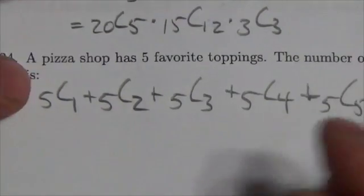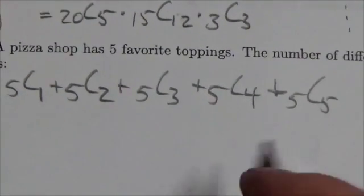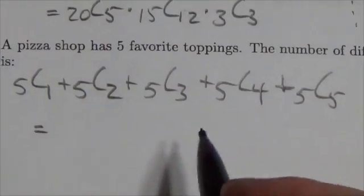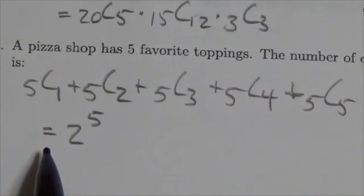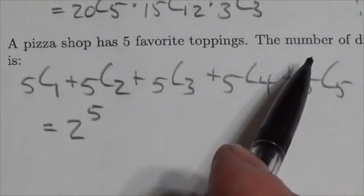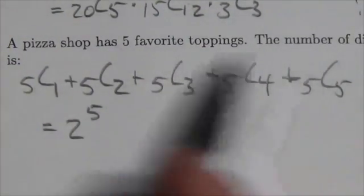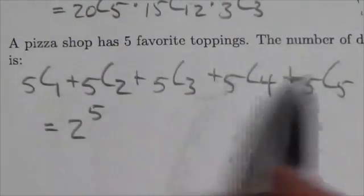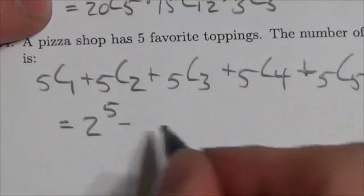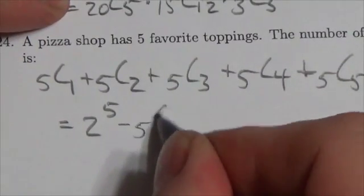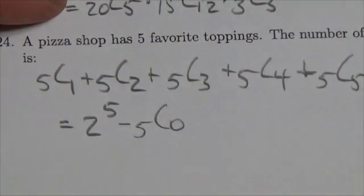Now that means that this is going to be the same as two to the fifth. Well, this is almost the same right now. This is approximately the same. I'm one term missing here. There's been a term that's been removed from here, and that is that five choose zero. So I'm going to just now subtract five choose zero from two to the fifth.